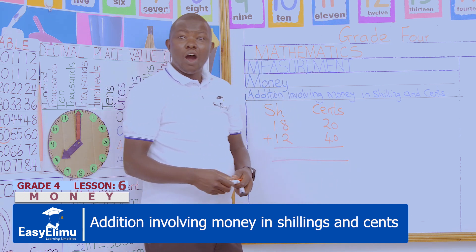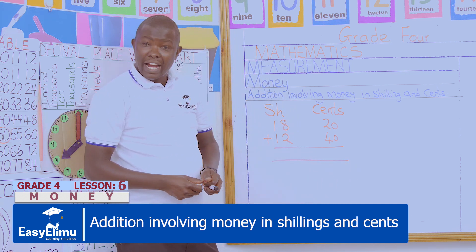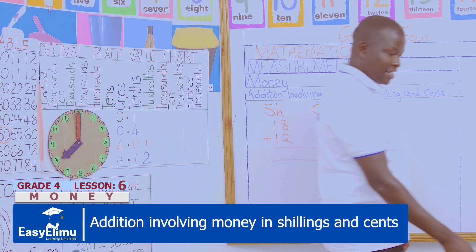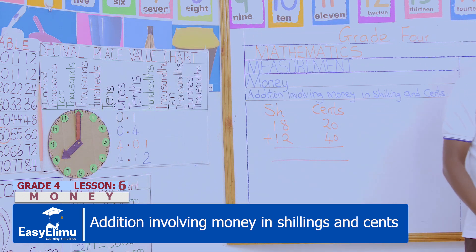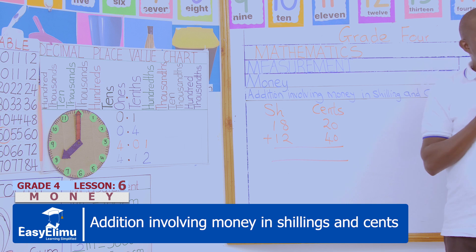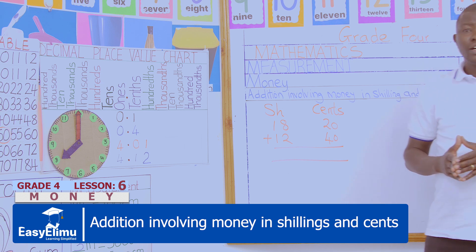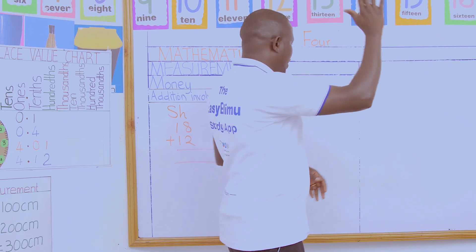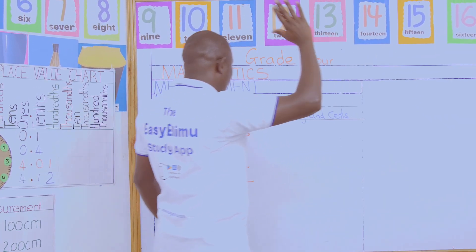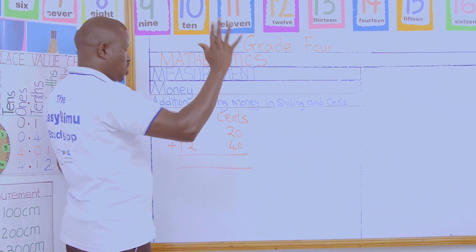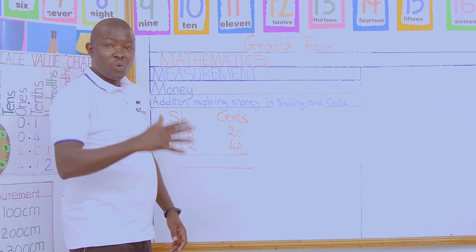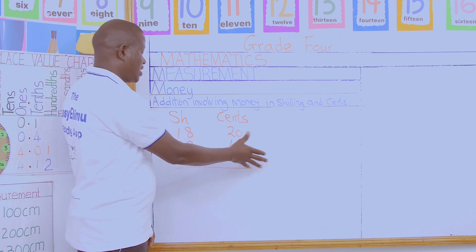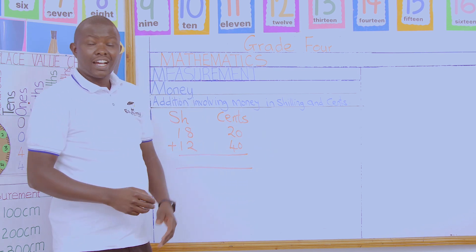In our groups, how do we do this addition? Remember, as we do addition in everything, we start from our right-hand side. For our case now, we will start from the cents, then after the cents we go to the shillings.